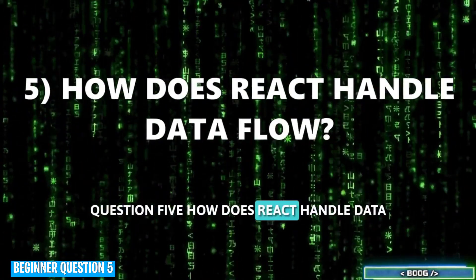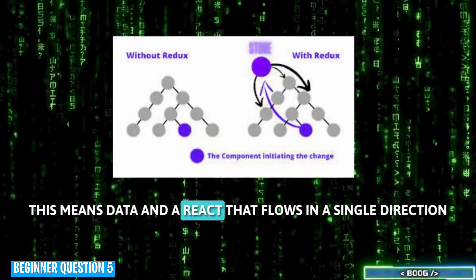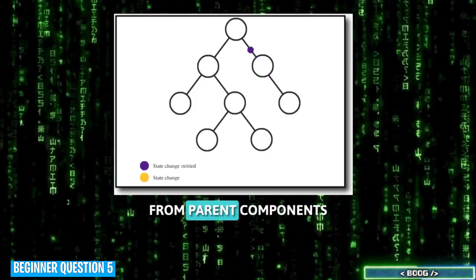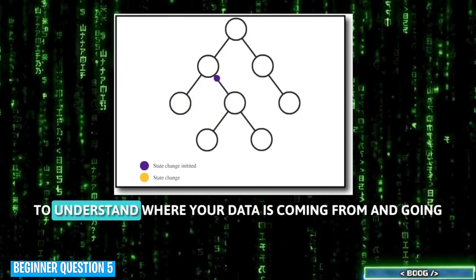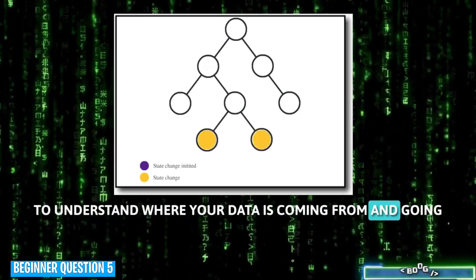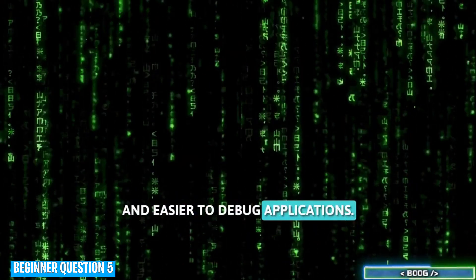Question 5. How does React handle data flow? React has a one-way data flow. This means data in a React app flows in a single direction from parent components down to child components through props. This one-way street approach makes it easier to understand where your data is coming from and going to, leading to more predictable and easier to debug application.